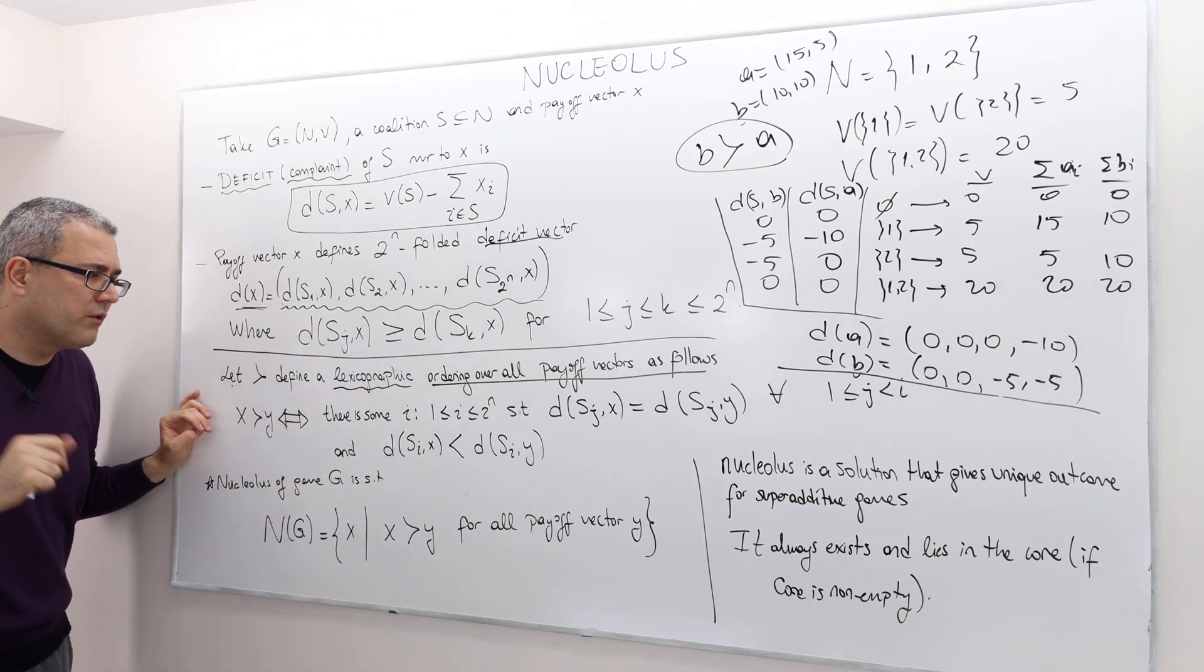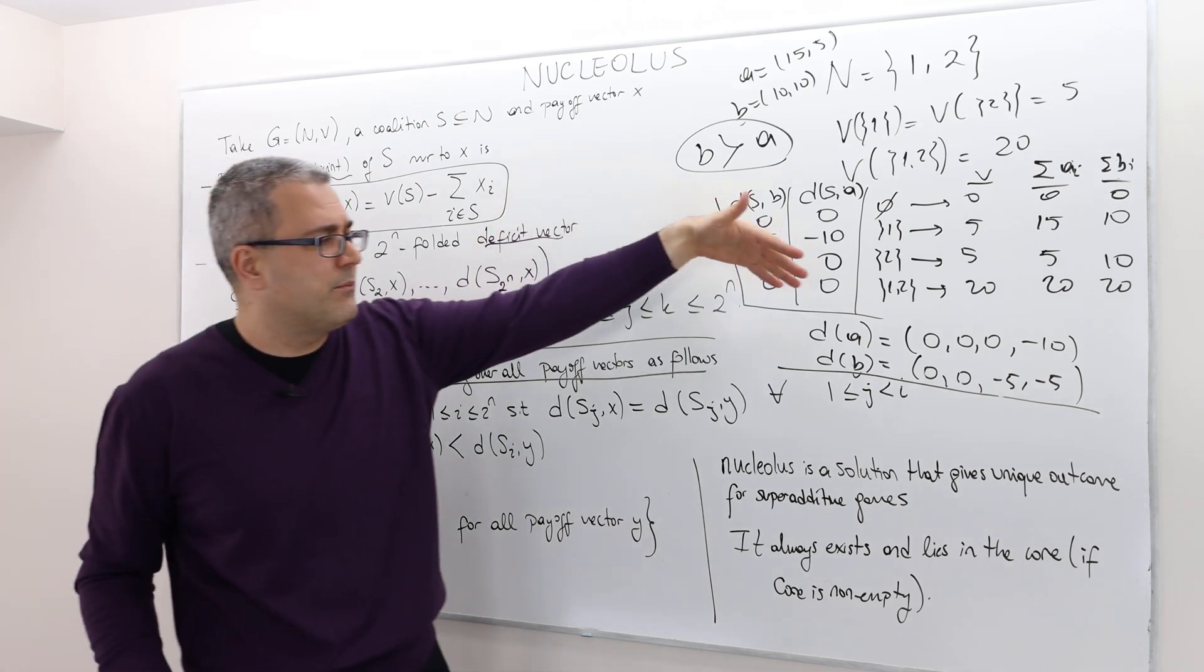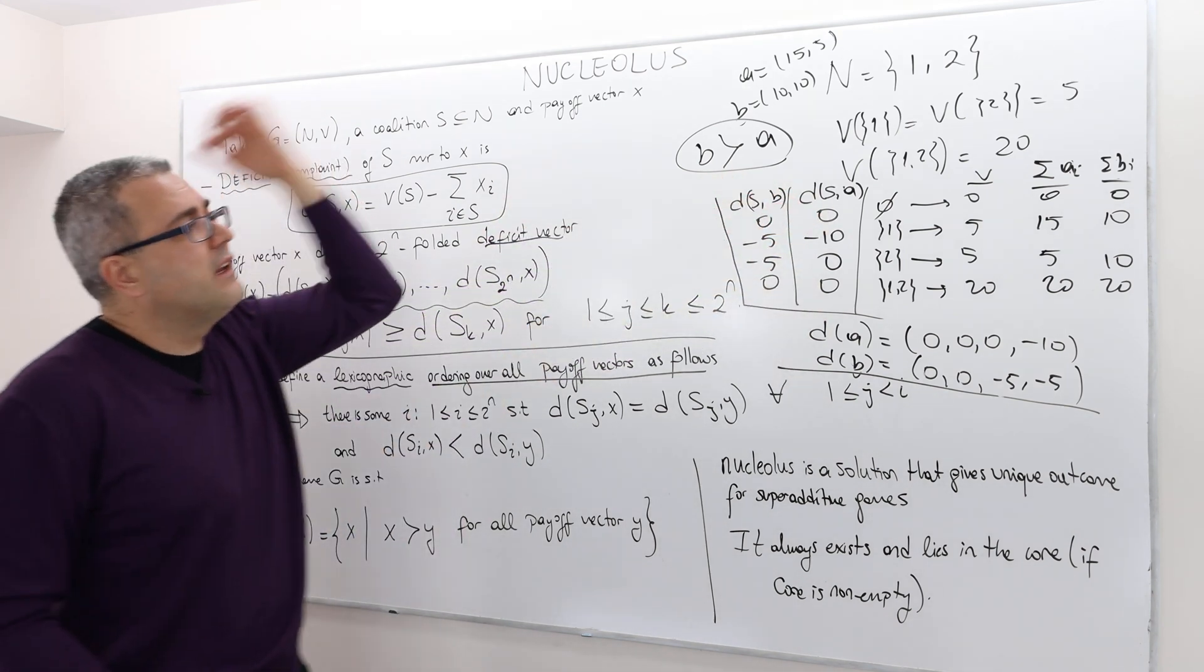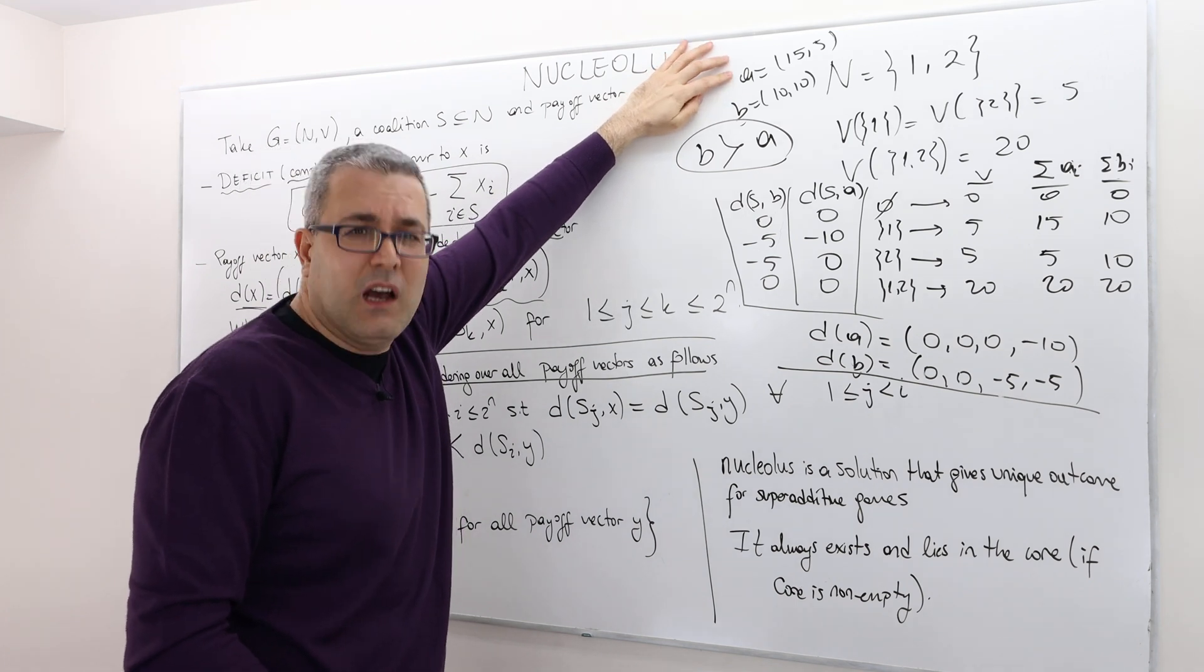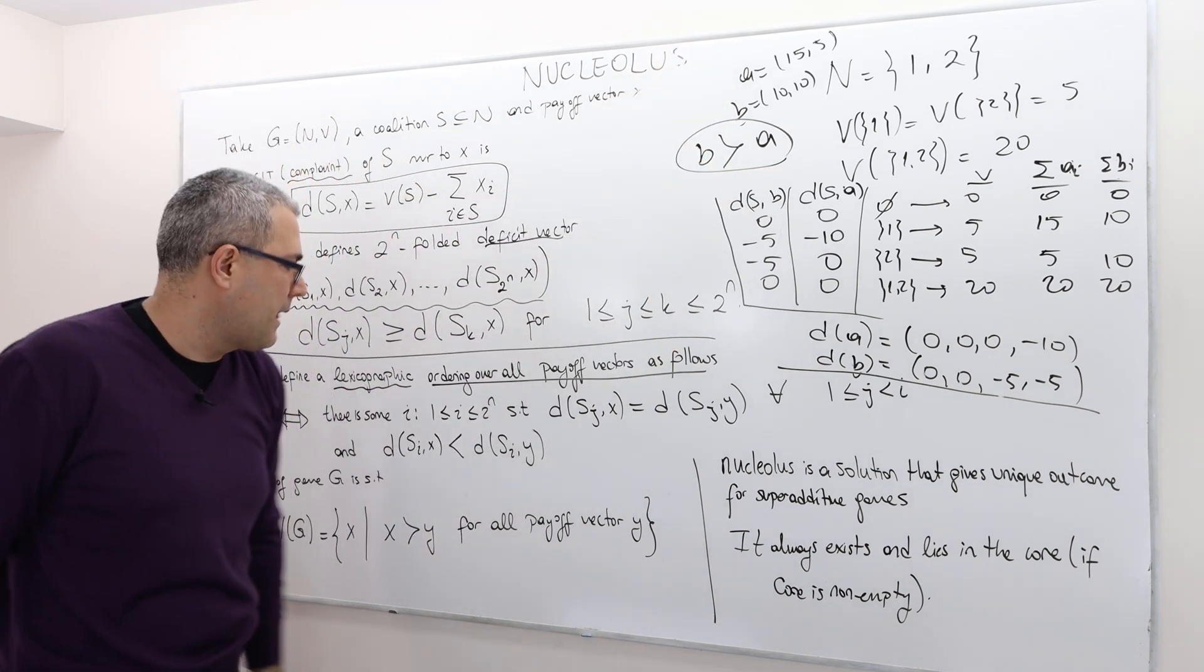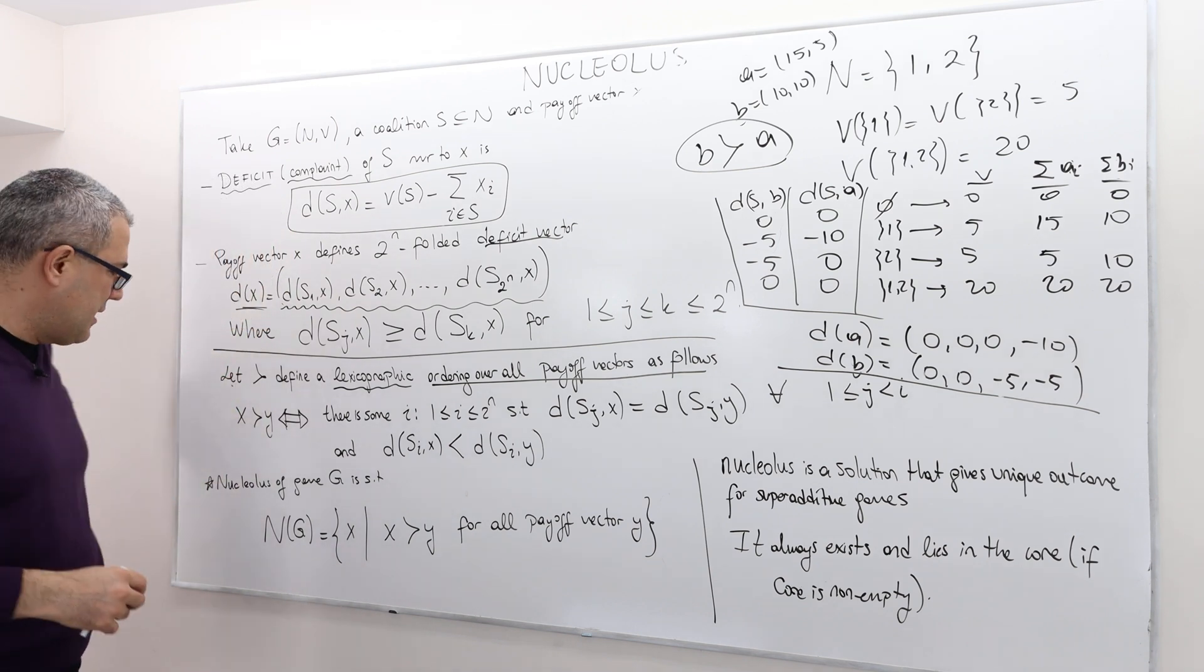I hope we are on the same page. As I said, in this example, b is better than a. And if you remember, b is the fair one, and a is the unfair one. So it makes sense.